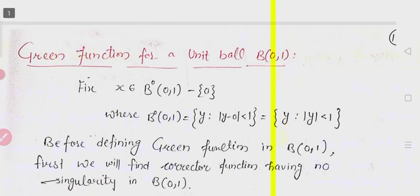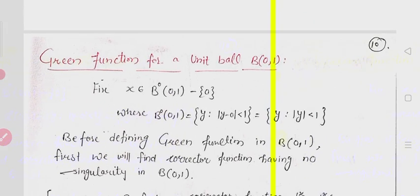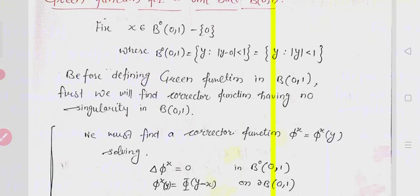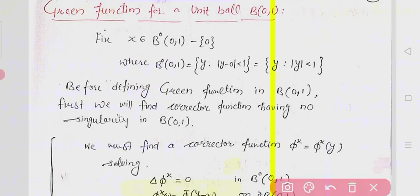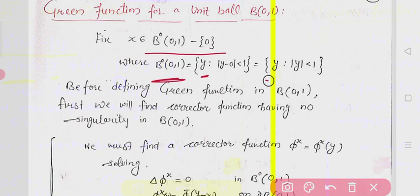Now we want to find the Green's function for the unit ball. For the Green's function, we first suppose some fixed x in the open unit ball B°(0,1), which is non-zero. The open unit ball is the set of all points y where |y| < 1. To define the Green's function in the unit ball, we first need to find the corrector function φ.